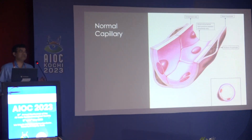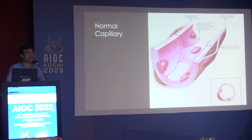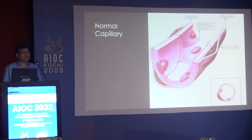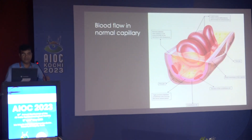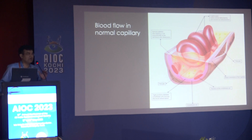Let us see how diabetic retinopathy starts in a capillary. This is a normal capillary — from inside it has endothelial cells which are tightly adherent to each other, forming the blood-retinal barrier. They are surrounded by the basal membrane and outside by pericytes. This is a healthy normal capillary. The blood supply of the retina starts from the inside and goes to the outer side. In a normal person the RBCs are very pliant and don't get stuck to each other. The platelets are healthy and there is a blood-retinal barrier, so the flow is very smooth.